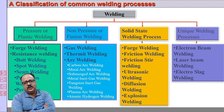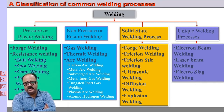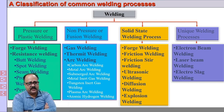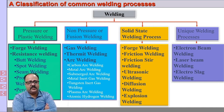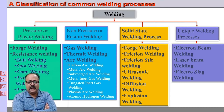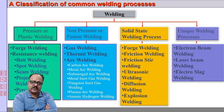This is a classification of common welding processes. We can classify into pressure welding and non-pressure welding. Pressure welding includes forge welding and resistance welding — with various subtypes: butt welding, spot welding, seam welding, projection welding, and percussion welding. Fusion welding processes include gas welding, thermite welding, and arc welding processes such as manual metal arc welding, submerged arc welding, MIG welding, TIG welding, plasma arc welding, and atomic hydrogen welding. Solid state welding includes forge welding, friction welding, friction stir welding, ultrasonic welding, diffusion welding, and explosion welding. Special processes include electron beam welding, laser beam welding, and electroslag welding.